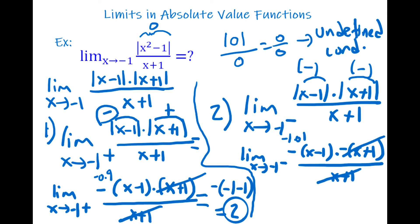Negative times negative gives positive, so we have +(x − 1). Put x = −1: (−1 − 1) = −2. So when x goes to −1 from the left, the limit is −2.